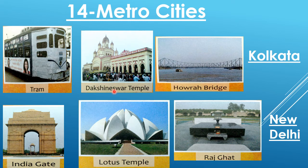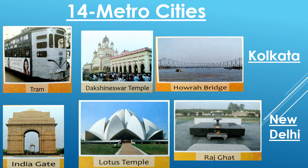Howrah Bridge — so this metro city's name is Kolkata. Next picture: India Gate, Lotus Temple, and Rajghat. These are the famous places of our country's capital, New Delhi. India Gate, Lotus Temple, and Rajghat — all three of these places are in New Delhi. So this is New Delhi, India's capital.